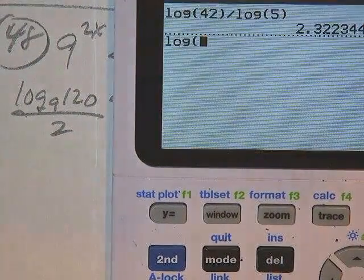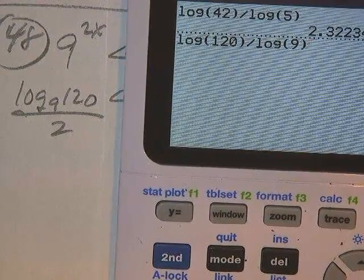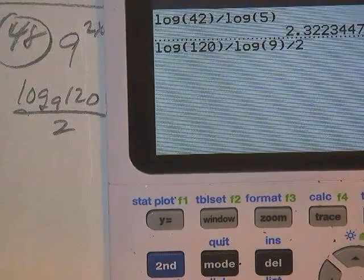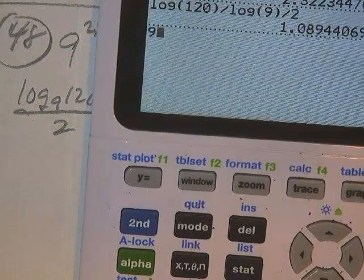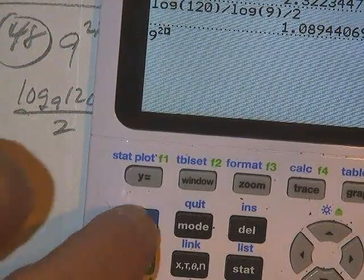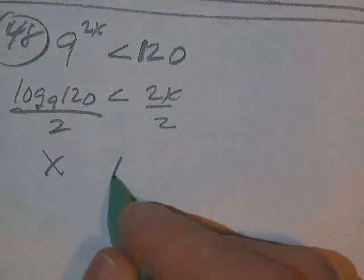Okay, so let's try it. How about log 120 divided by log of 9, then divide the whole thing by 2. So we think this is the answer. Let's try it. 9 up to the 2 answer power. It was 120. So that's my number.